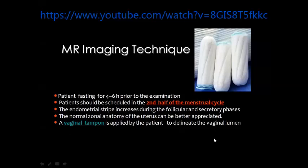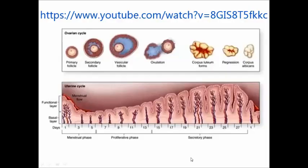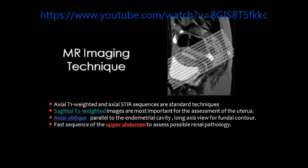It is better to examine the female patient in the second half of the menstrual cycle, but this is not a rule. Sometimes we may use vaginal tampons especially when examining the cervix and vagina. This is the menstrual cycle starting with the menstrual phase, followed by the proliferative phase, the secretory phase, and ovulation. The ovarian cycle starts with the primary follicle, secondary follicle, and vesicular follicle which ovulates and transforms into the corpus luteum, then progresses or degenerates to corpus albicans. I will touch on this issue in detail in the section of ovarian pathology.